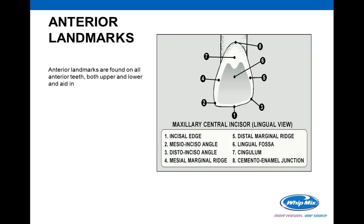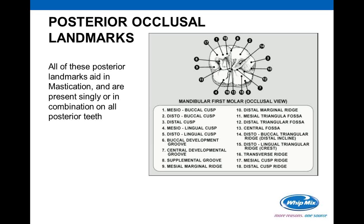Anterior landmarks are found on any anterior tooth, upper and lower. Notably, anterior teeth also have marginal ridges — that's often overlooked. Landmarks include the ridge structures, the cingulum, and the cemento-enamel junction. For posterior teeth, there are significantly more landmarks: the cusps, grooves, ridges, and the fossa — also known as the pit — at the bottom.